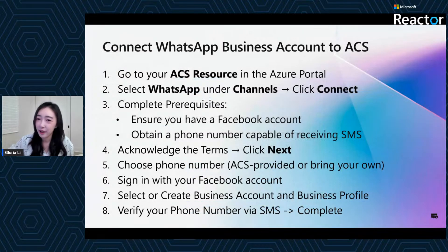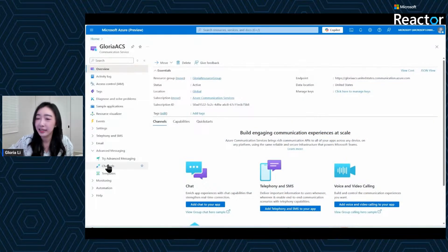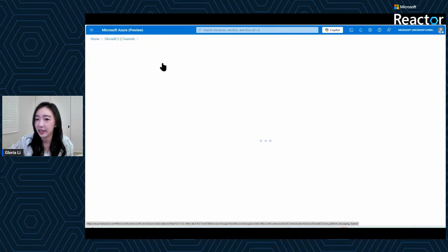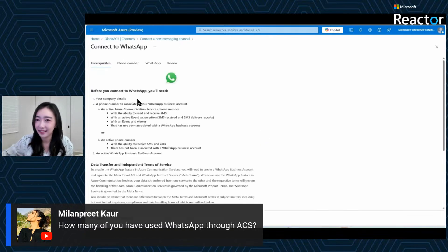Once you're comfortable with the sandbox, the next step is to connect a real WhatsApp business account. This allows you to send messages in a production environment to real users. We will click on the Channels tab. At this moment we don't have any channels configured yet, so let's click Create a new channel and select WhatsApp as the channel.